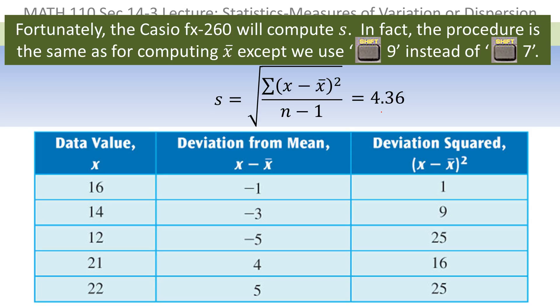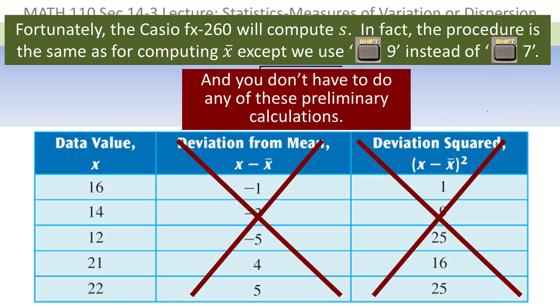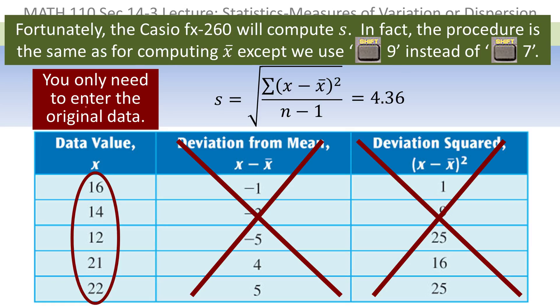Fortunately, our Casio FX260 will compute the standard deviation. The procedure is exactly the same as computing x-bar, except instead of pressing shift 7 for the mean, you press shift 9 for the standard deviation. So you really just have to remember to use shift 9 instead of shift 7. That also means you don't have to do any of the preliminary calculations — the deviation from the mean and the deviation squared — because the calculator takes care of all that.